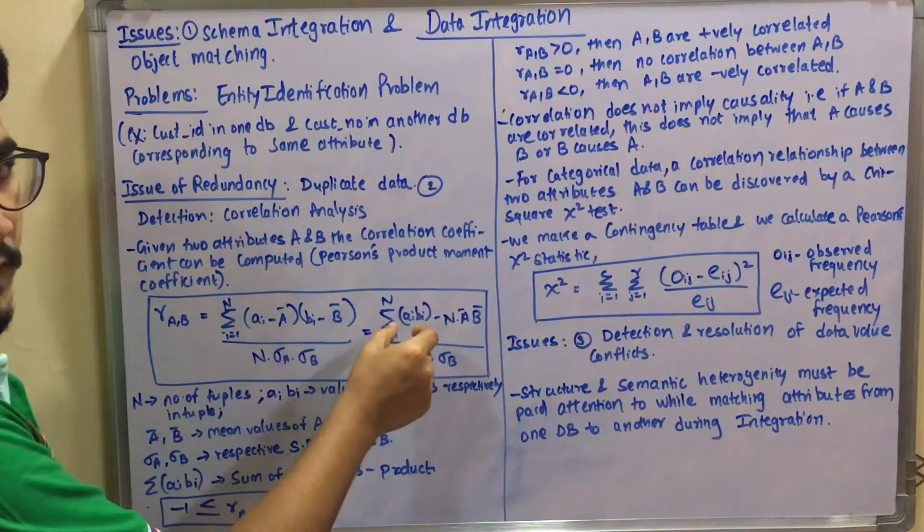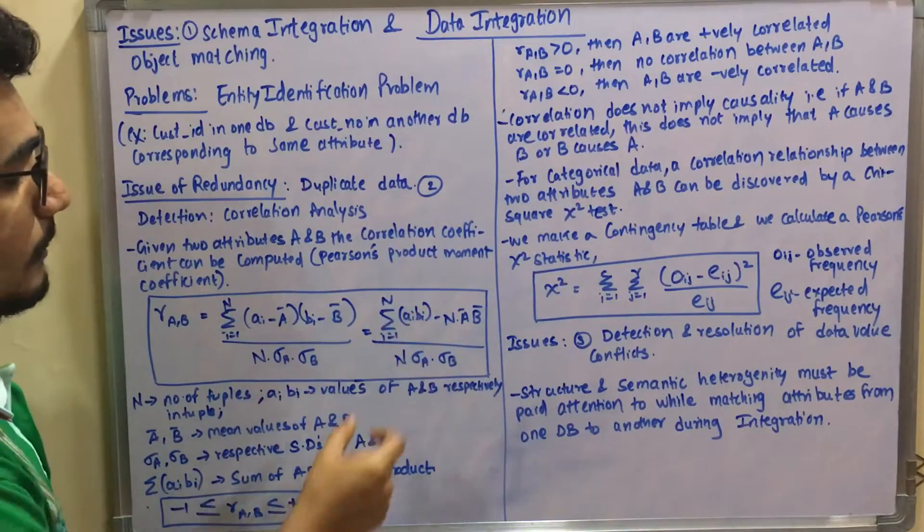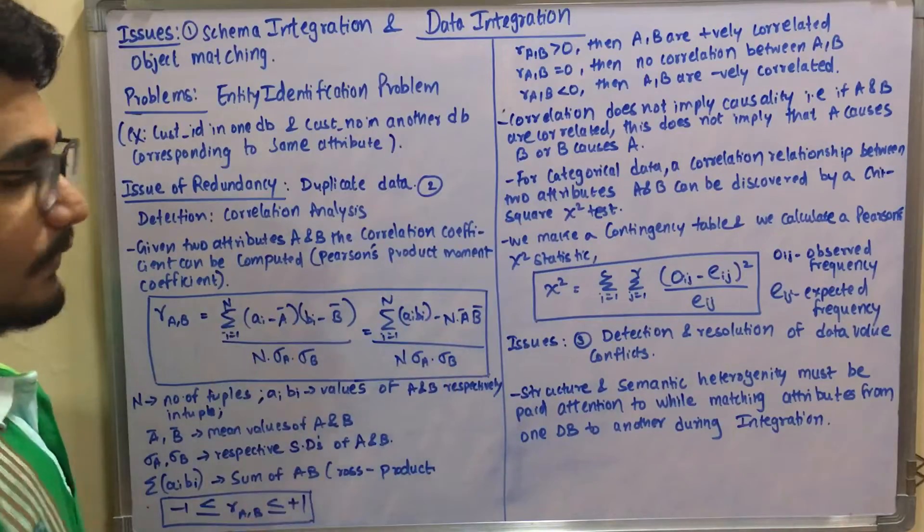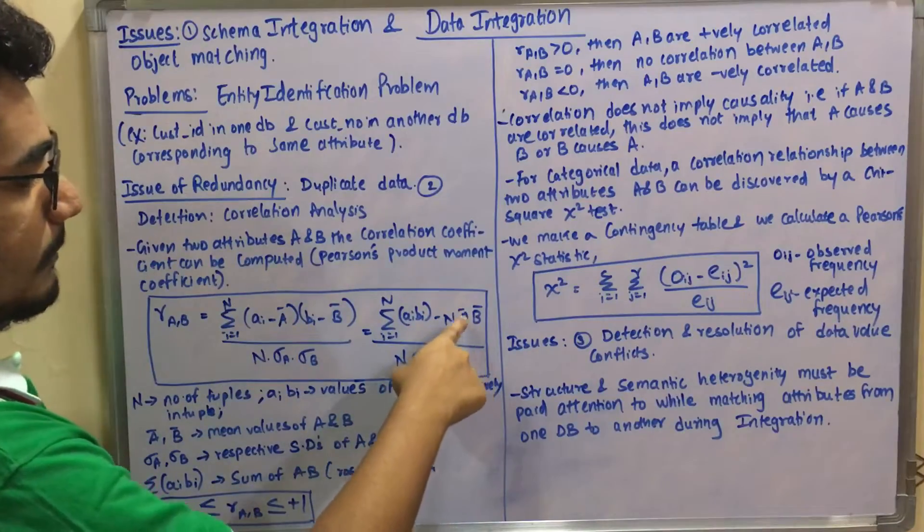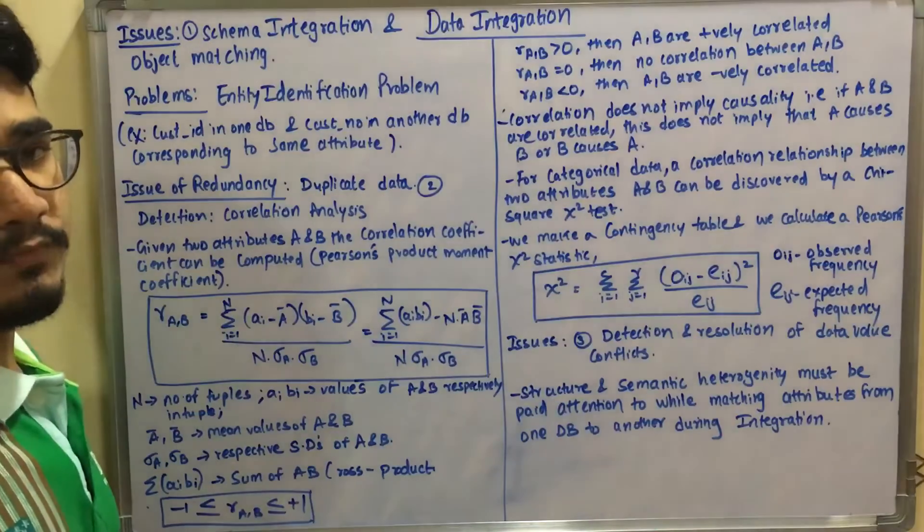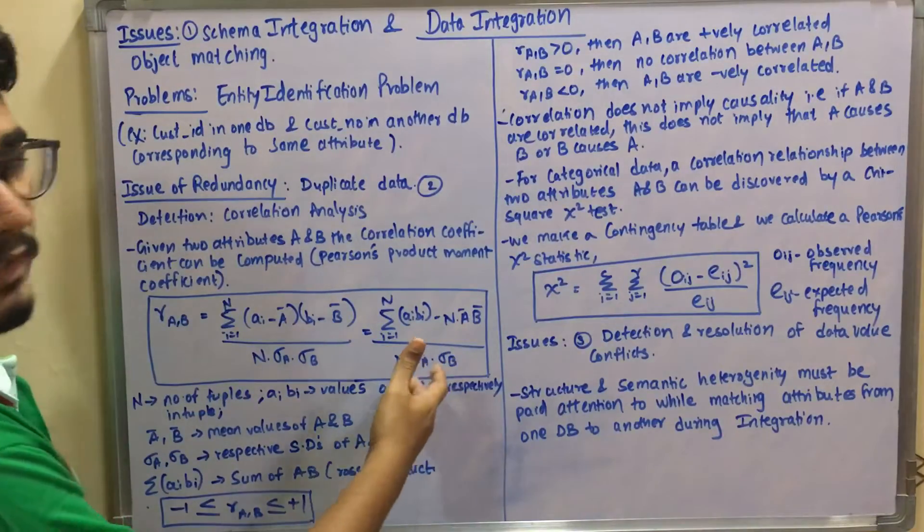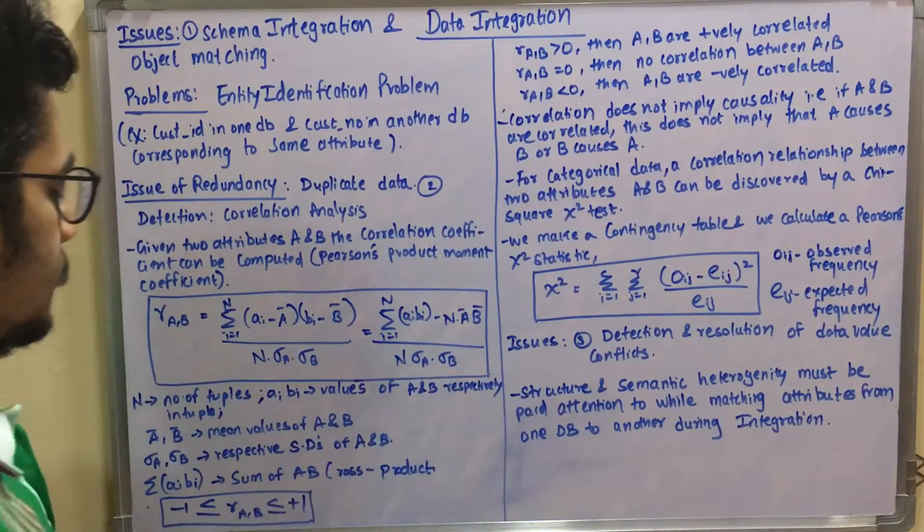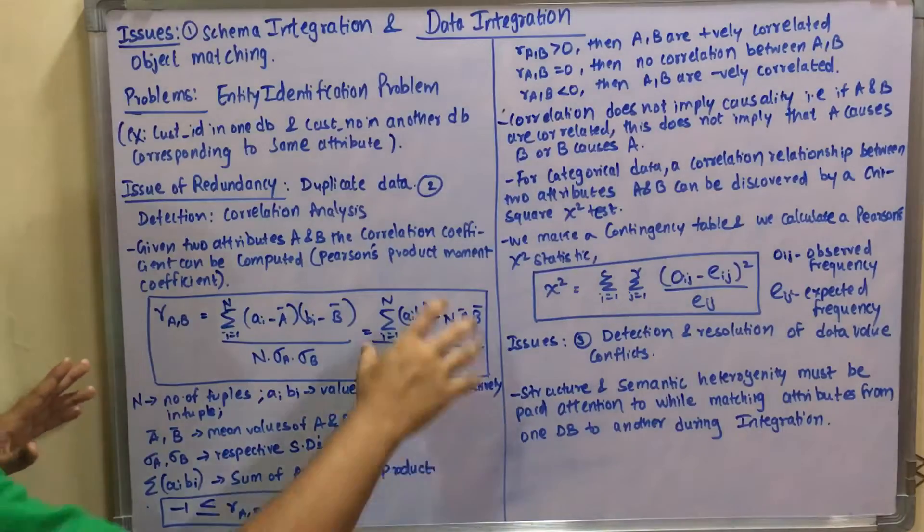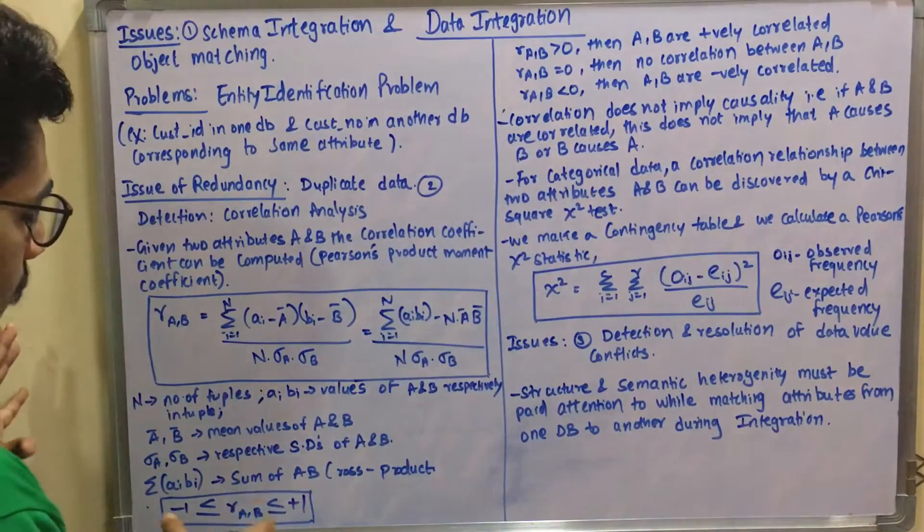This formula can also be written as: summation i from 1 to n of a_i·b_i minus n·ā·b̄, divided by n·σ_a·σ_b, where ā and b̄ are the means of A and B.